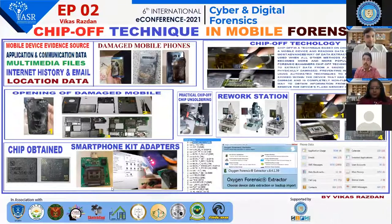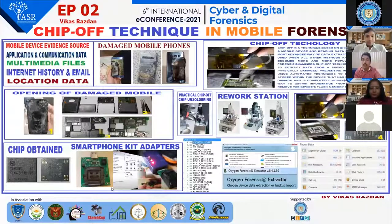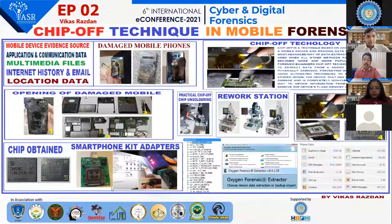The question arises: if we are at a crime scene and we get a damaged mobile phone, how is it possible for us to gather this data? The various techniques used for data extraction include logical extraction, backup extraction, file system extraction, JTAG technique, and ISP methods. But when all these methods fail, we are only dependent on the chip-off technique.